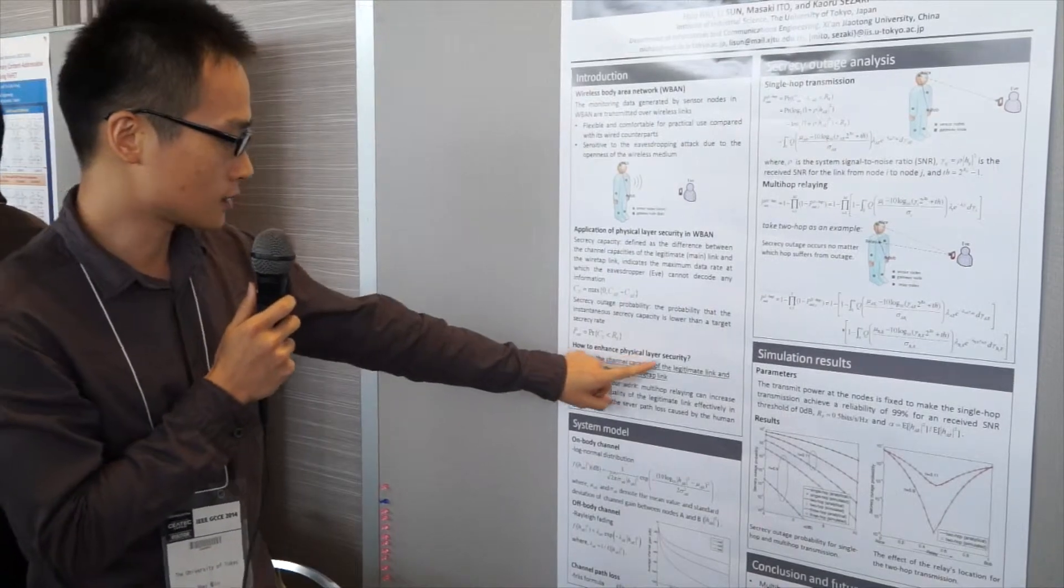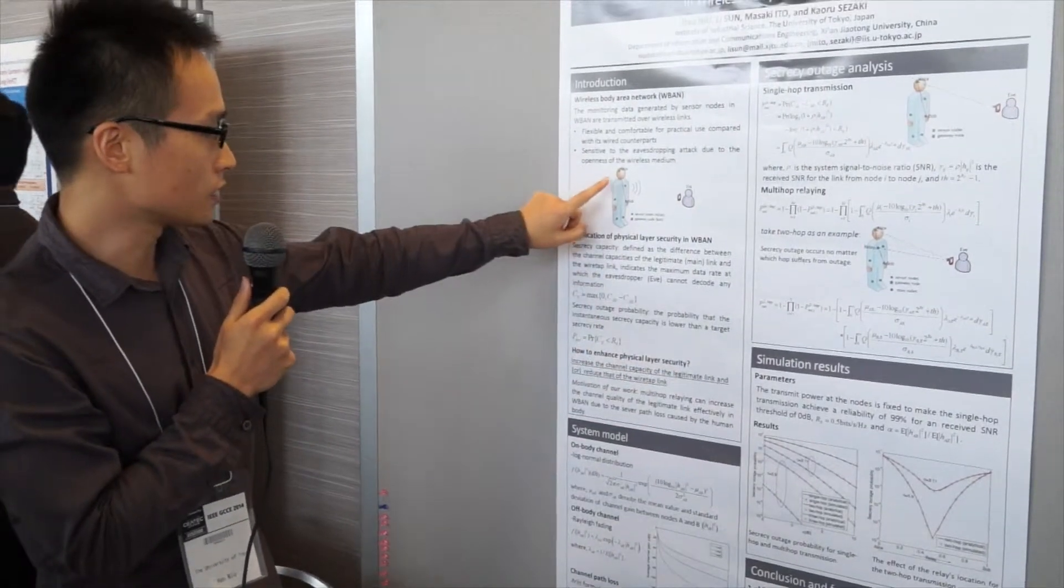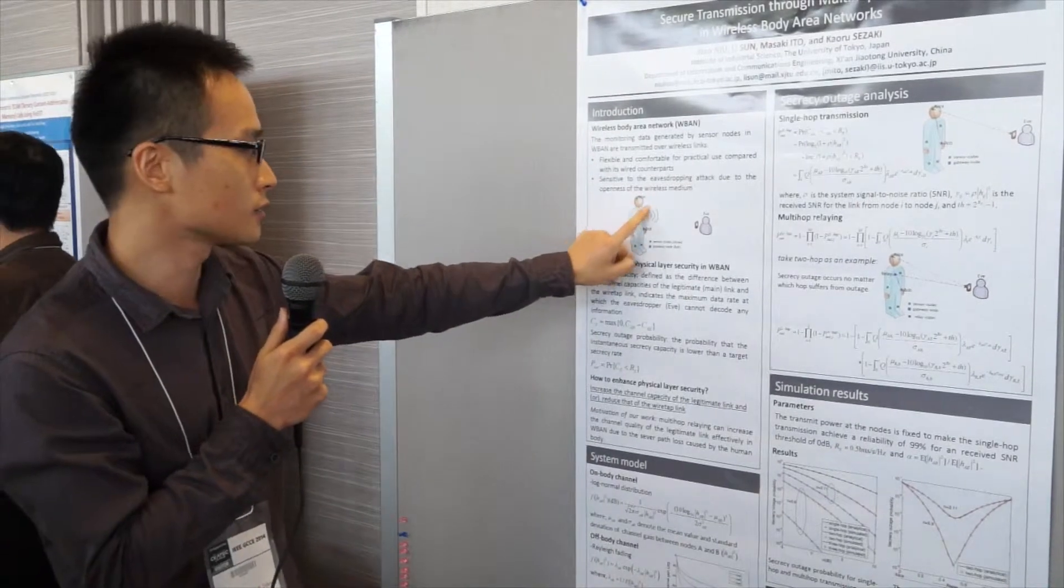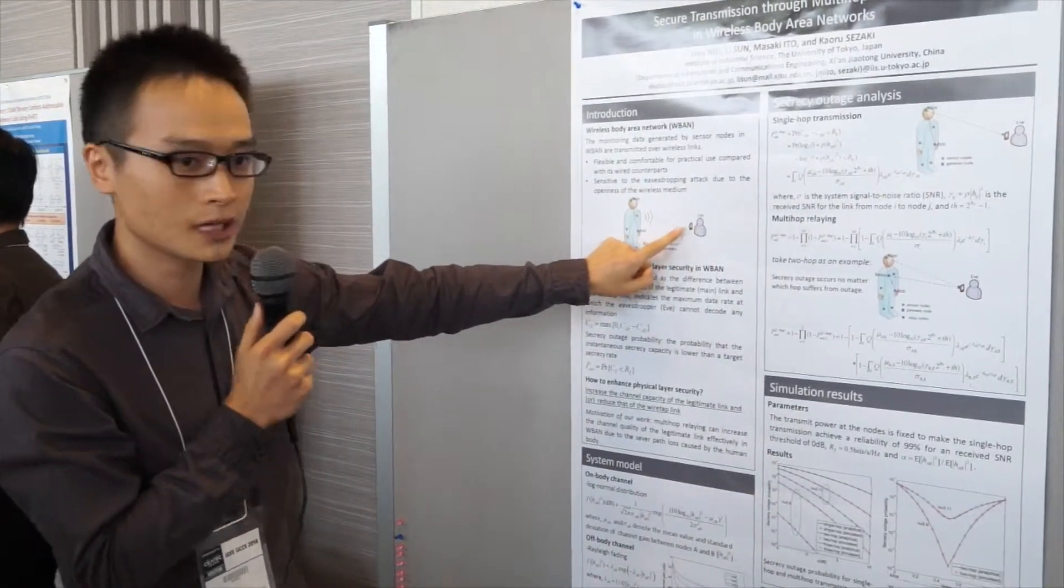To improve the physical layer security, we must increase the channel quality of the legitimate links and reduce that of the wiretap links.